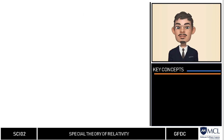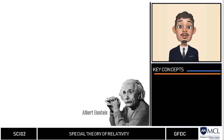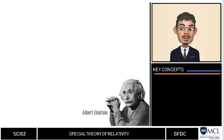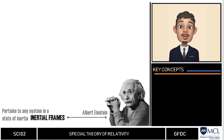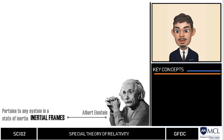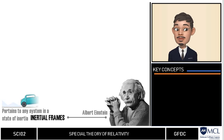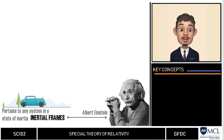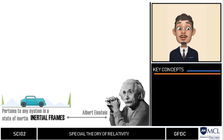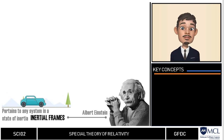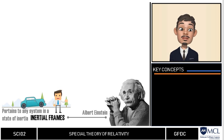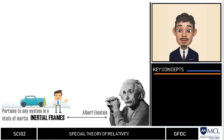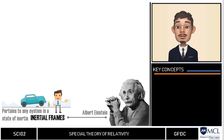Albert Einstein believed that Maxwell's equations are valid in all inertial frames. In physics, the term inertial frame pertains to any system which is not accelerating, or is in a state of inertia. A quick example: when a driver running a car at 100 km per hour slams the brakes and is thrust forward, the inside of the car is not the inertial frame of reference. The observer who is not moving on the side of the road is the inertial reference frame.